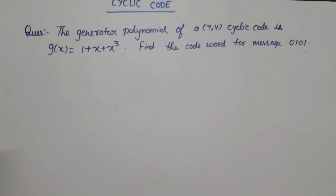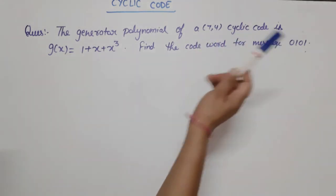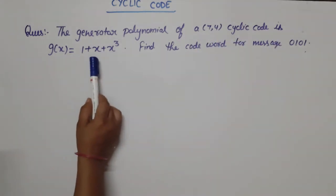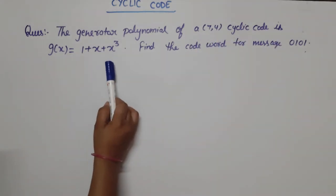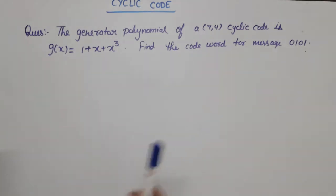For this question, the generator polynomial of a (7,4) cyclic code is g(x) = 1 + x + x³. Find the codeword for the given message. The message is already given. So we will use the polynomial method.